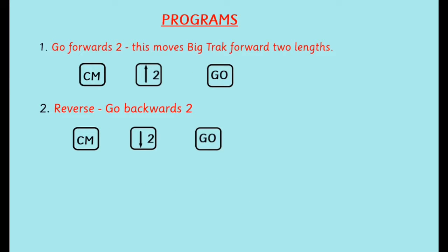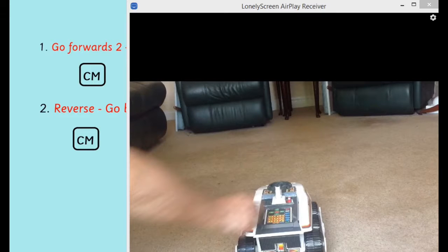So let's look at some programs. The first one is go forward two - a simple one, just move Big Track two lengths forward. The second one is let's go back two - another simple one, just move Big Track backwards. So it's CM clear memory, of course, two with the forward arrow, and go. Let's look at the first program, go forward two.